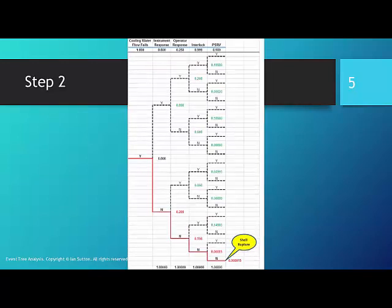We can quantify the event tree as shown here. The probability of cooling water failure is set at 1. In other words, we define this event as having occurred. The instrument response has a probability of failure of 0.2, the operator of 0.75, the interlock 0.001, and the pressure safety relief valve of 0.1.